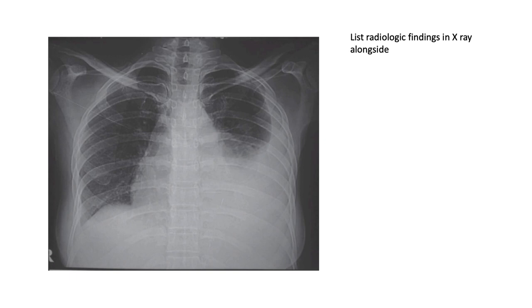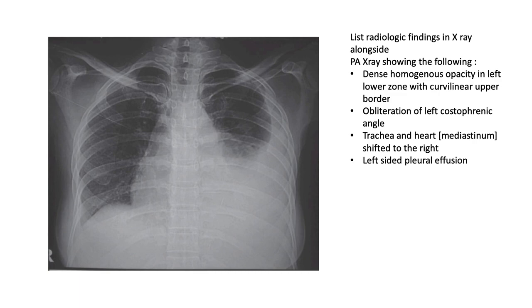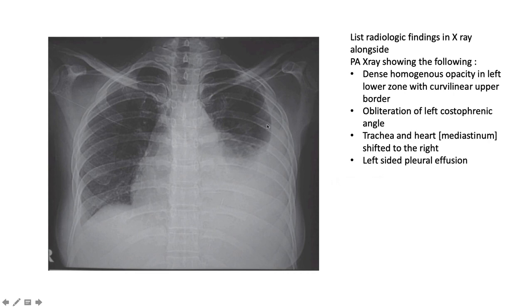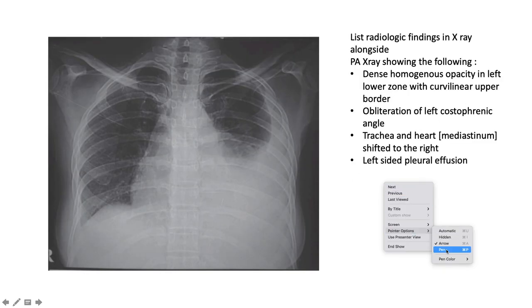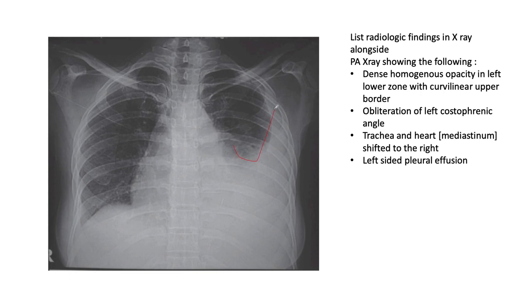For the sake of time, we'll focus on the key findings in each X-ray. Here we see a dense homogenous opacity in the left lower zone with a curvilinear upper border — called a meniscus sign.